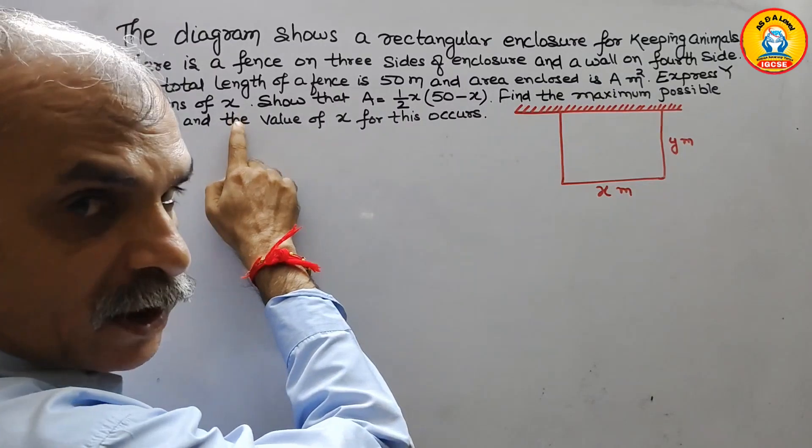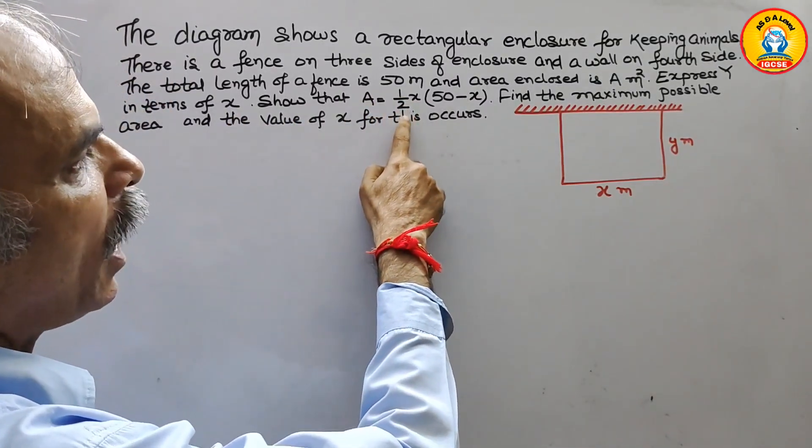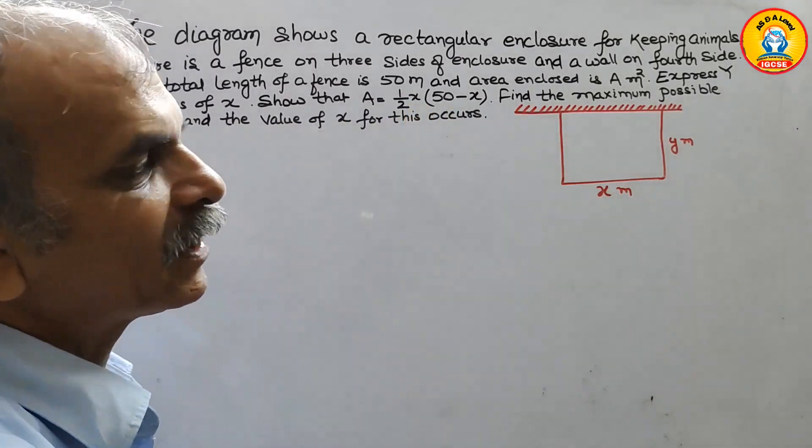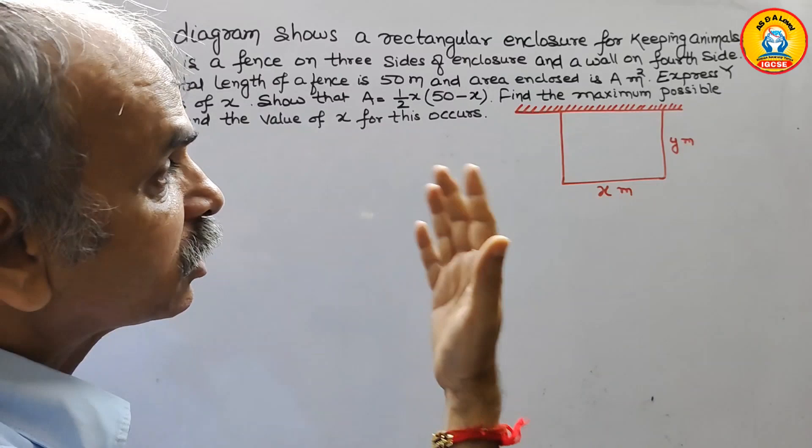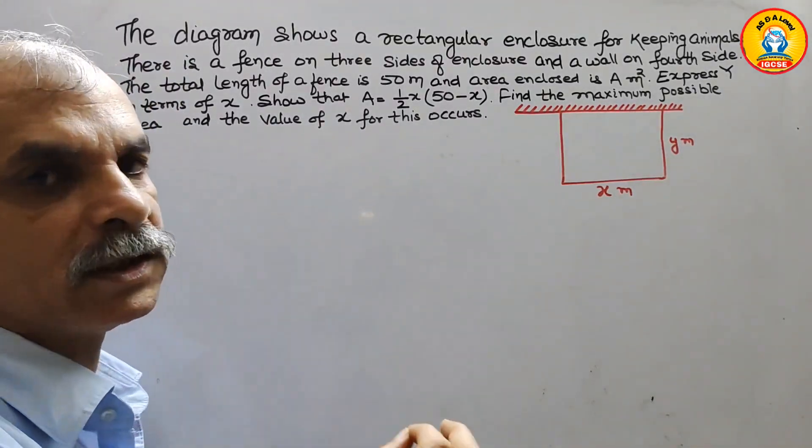Express y in terms of x. Show that area is equal to half x times 50 minus x. Find the maximum possible area and the value of x for this to occur.